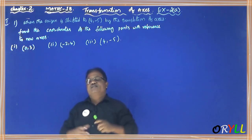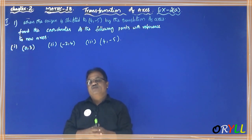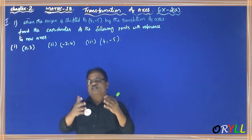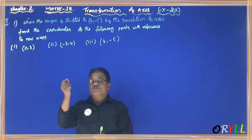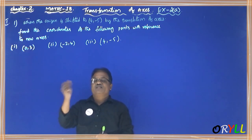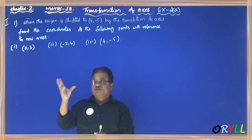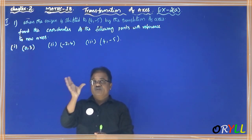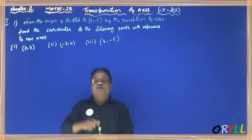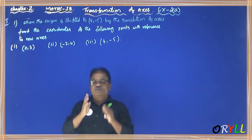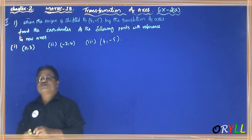Find the new coordinates of the point. The meaning is: what is given are the original coordinates of the point. So, given are the original coordinates, the shifted origin is given, and we need to find the new coordinates of the point with reference to the new axis.